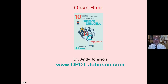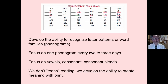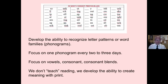Andy Johnson. We are looking at onset rhyme as used as part of a strategy to develop word identification skills. This is done in the context of the 38 most common phonograms. Our goal is to develop the ability to recognize letter patterns or word families called phonograms, focus on one phonogram every two to three days, and this way you can focus on vowels, consonant, consonant blends.